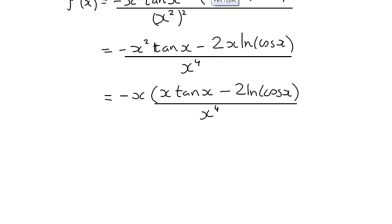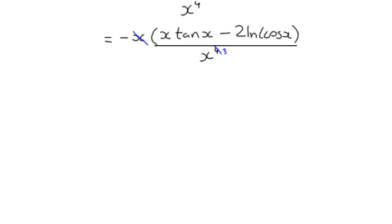Then I'm going to divide through by x, so that disappears and that goes down to 3. I'm going to write my minus sign just at the beginning, so we've got negative. What I could do is I should just write negative 1 over x cubed, and then do x tan(x) - 2 times the natural log of cos(x). And that saves me writing a whole big fraction.